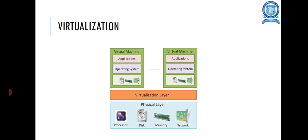Virtualization is mainly divided into two categories: platform virtualization and resource virtualization. Platform virtualization involves the simulation of a virtual machine, while resource virtualization involves the simulation of combined, fragmented, and simplified resources.